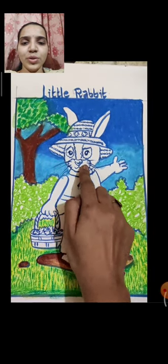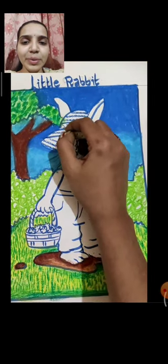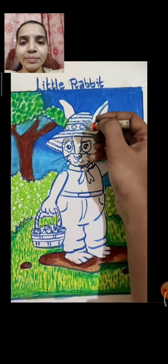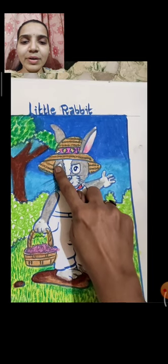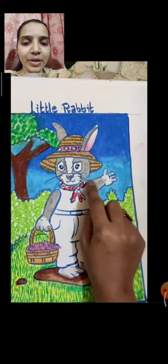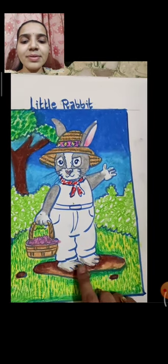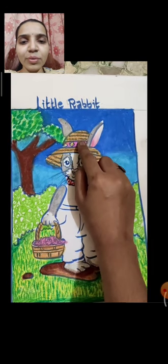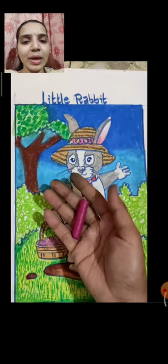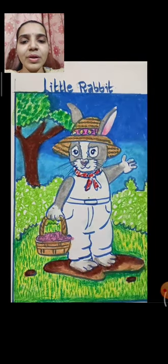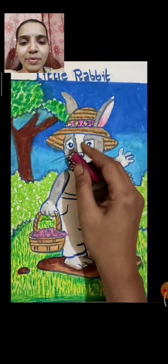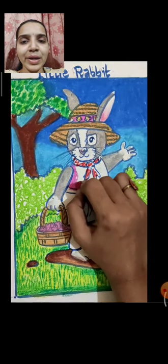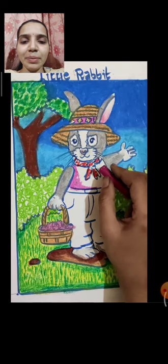Now we will color our rabbit using gray color. See where I have done gray color - on the hands, on the legs a little. The basket is done with ochre yellow, and the cap also with ochre yellow. Now coloring the dress with rose pink and light pink color - rose pink and light pink.